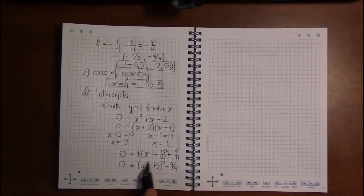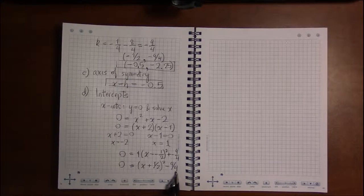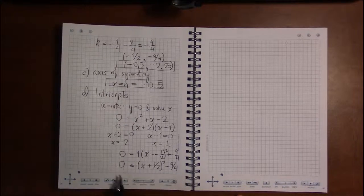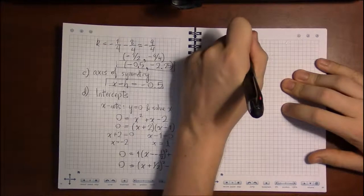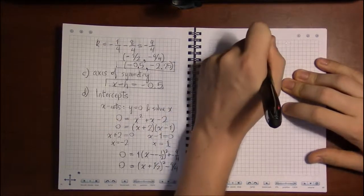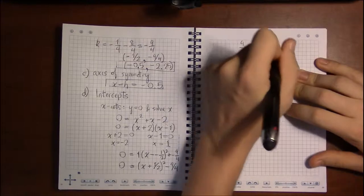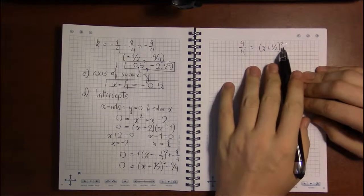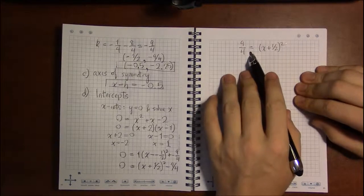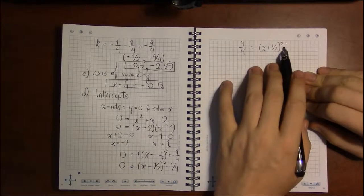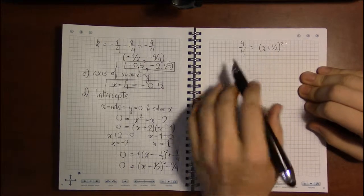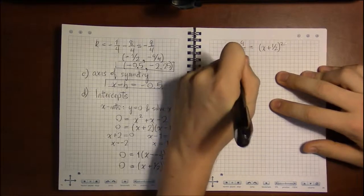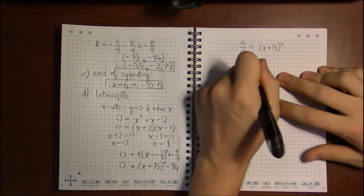So, if we isolate what's being squared. In other words, if we move 9 fourths to the other side, we'll add 9 fourths to the other side. Then, we have to peel away the squared. That's the next thing to get rid of. So, to get rid of a square, we're going to take square roots of both sides. Not forgetting the plus or minus that needs to come in front.